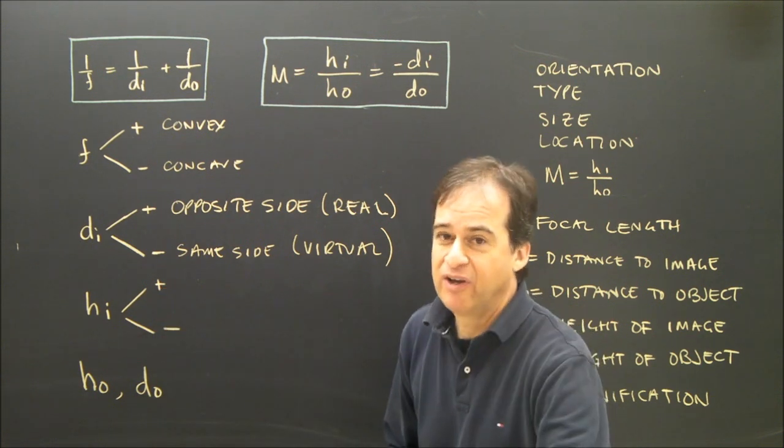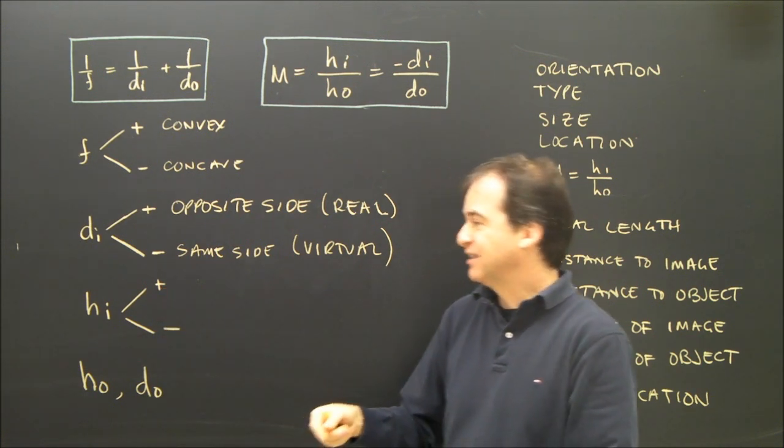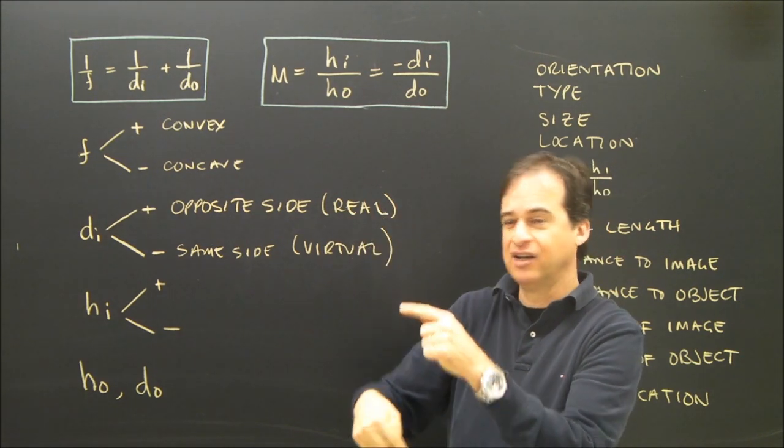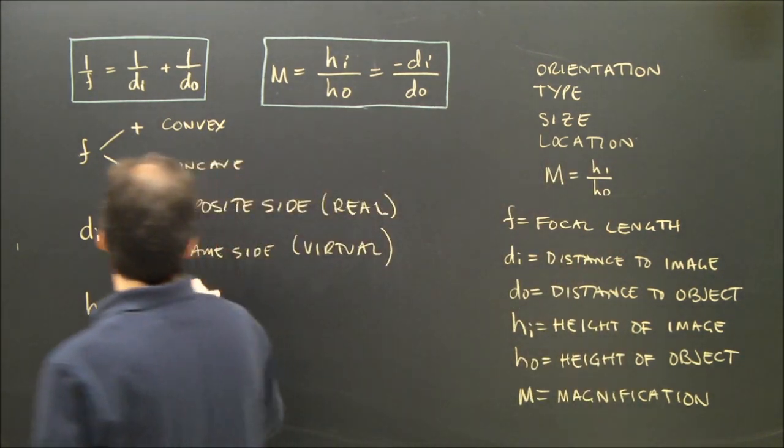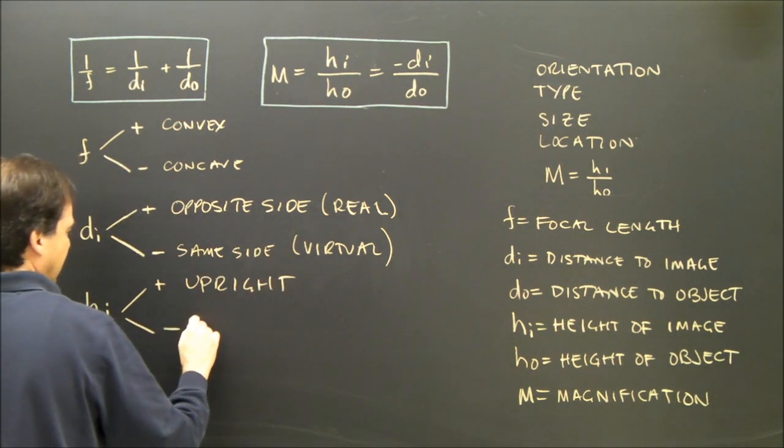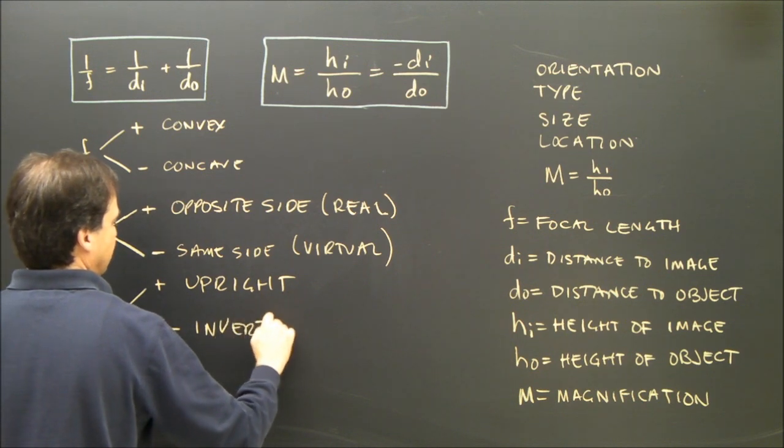Height of image? The height of the image, it makes sense that if it's this way, we're going to call that a positive image. If it is this way, negative. So positive means upright, and negative means inverted.